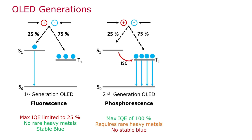A second-generation OLED enables a maximum IQE of 100% as it emits from a triplet state. The population in the singlet excited state can move to the triplet by inter-system crossing and then emit phosphorescence. The drawbacks of these materials is that they include heavy metals and they cannot produce a stable blue OLED.